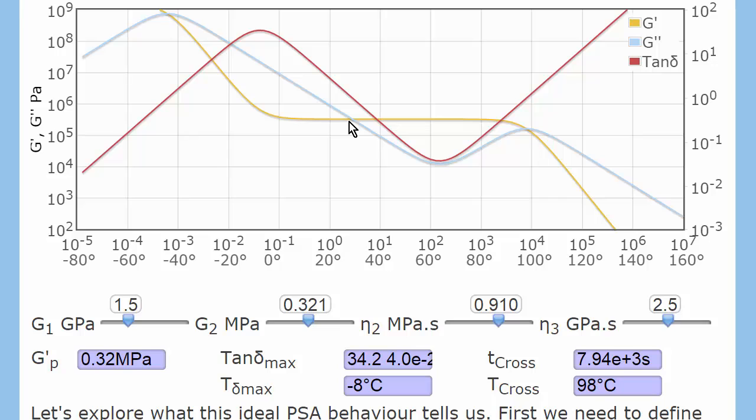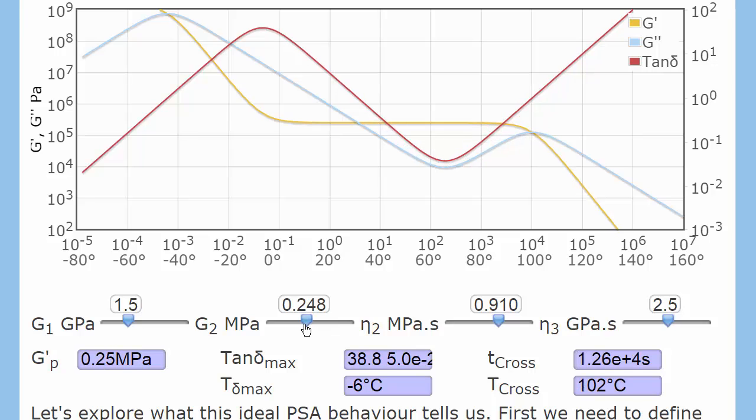it will have a modulus of 0.3 megapascals, or just below, because that's the Dahlquist criterion.